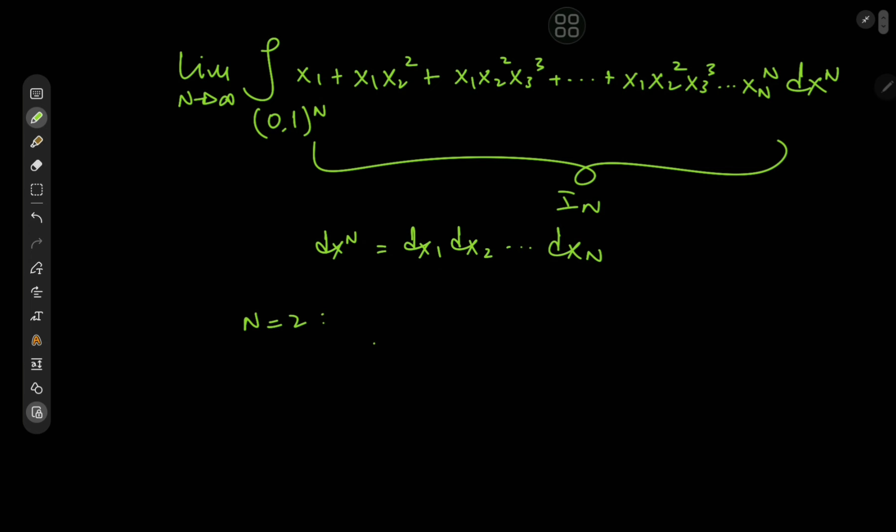So as per the statement, I_2 would be the double integral from 0 to 1 of x1 plus x1*x2^2 dx1 dx2. And from here we can work our way up because we could notice a pattern if we evaluate I_2 and maybe even I_3. So that's exactly what we're going to do.